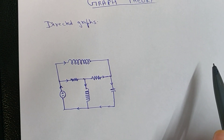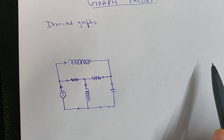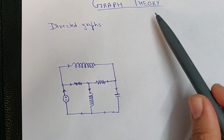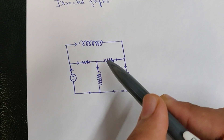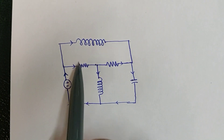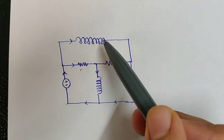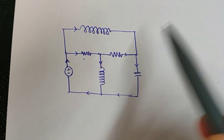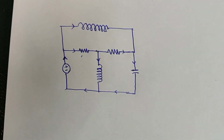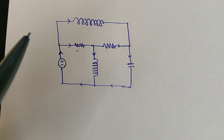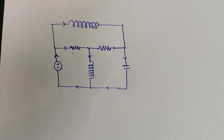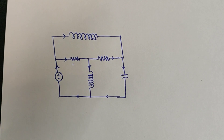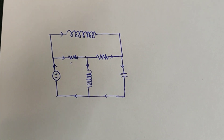Hello guys, today we will learn about directed graphs in graph theory. We are given a natural circuit which has internal impedance, an inductor, and a capacitor. We will try to draw the directed graph for this circuit, and using this example you will learn how to draw the directed graph if any network is given.